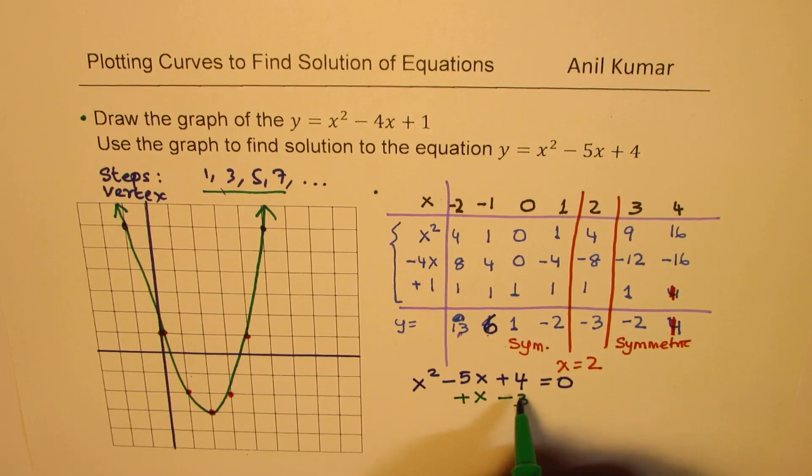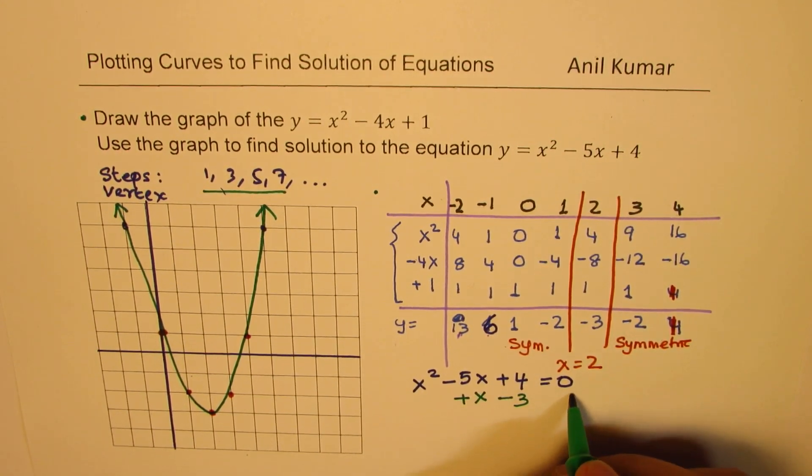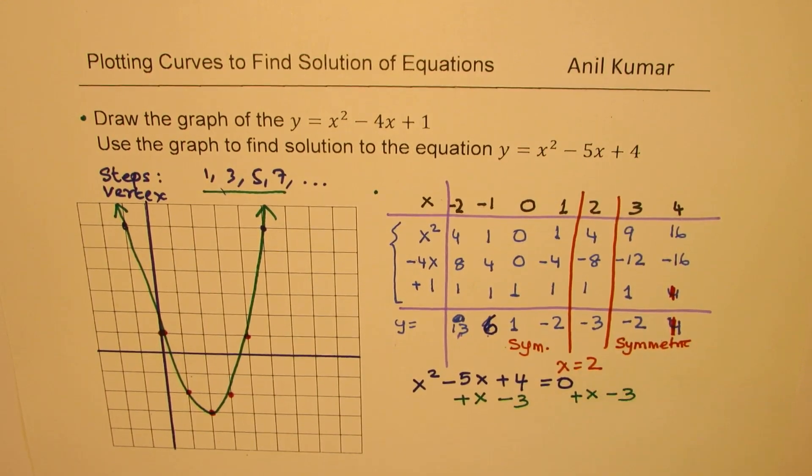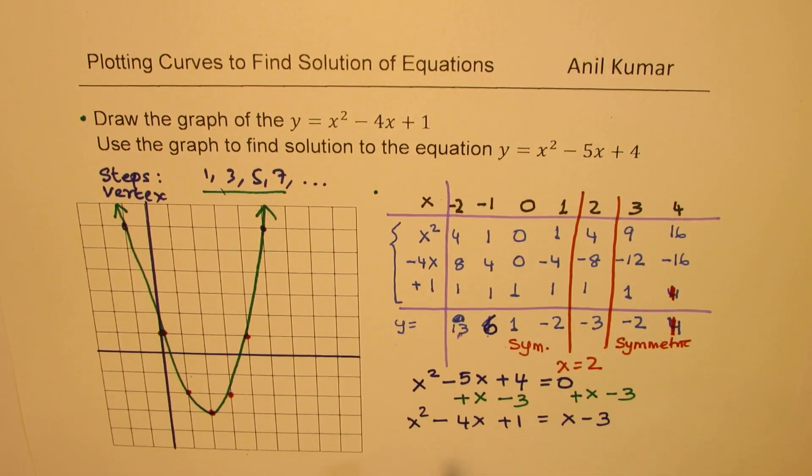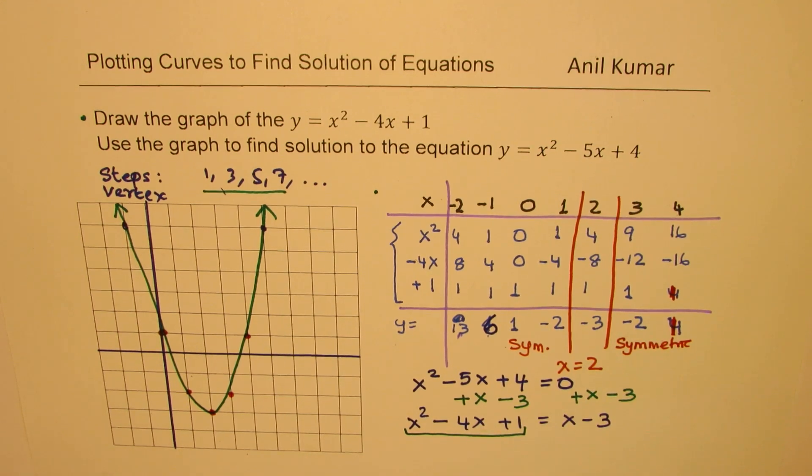Then we get 4. We can do this operation on both the sides. So we'll add x and take away 3 from the other side also. Then what do we get? Then we get x squared minus 4x plus 1 equals x minus 3. So that means we already have this particular graph. If I draw a line y equals x minus 3, intersection of line with the graph gives us the solution. Perfect. So that is the concept.